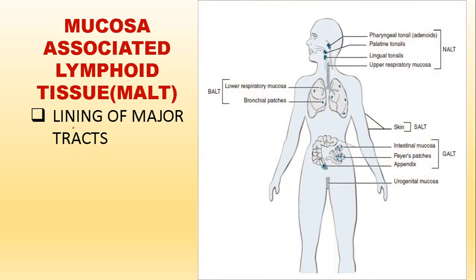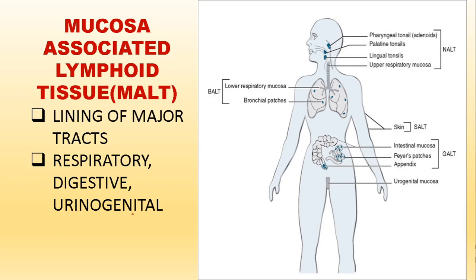Mucosa associated lymphoid tissue, in short MALT, consists of lymphoid tissues found in the lining of major tracts — the inner lining of the respiratory, digestive, or urinogenital tracts. Accordingly we have different types: nasal associated lymphoid tissue, gastrointestinal associated lymphoid tissue. Even in the gastrointestinal tract, there will be some tissues responsible for producing or releasing immune cells. If any antigen reaches there, they will provide an additional immune response besides what the normal lymphoid organs are doing.